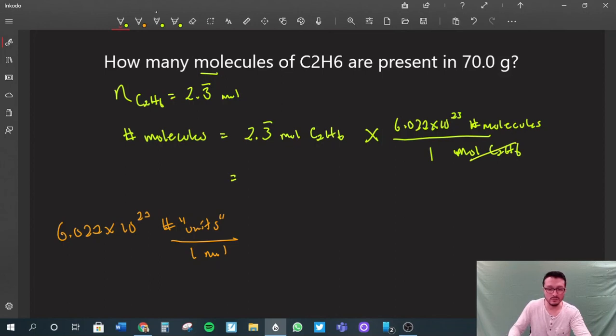Molecules cancels out, and what we're really doing here is 2.3 continuing times 6.022 times 10 to the 23, and we get 1.40466. I always like to keep at least four, five, six digits past the decimal place—times 10 to the 24.